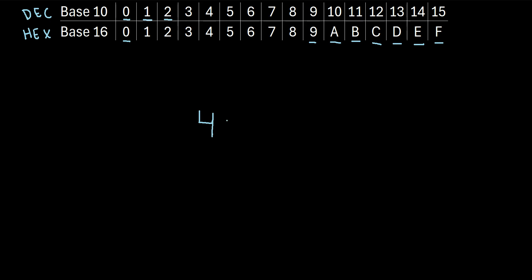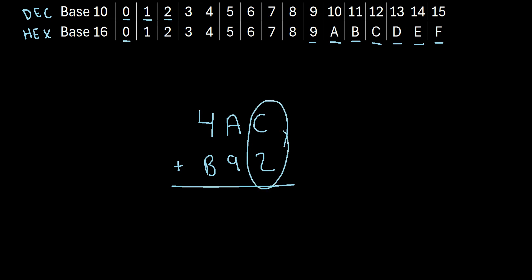Let's say we want to do 4AC plus B92. How can we add these two hexadecimal numbers? We'll start just like ordinary addition, focusing on the first column. What is C plus 2? Well, remember C is the same as 12. So really what we have is 12 plus 2, which is 14. But instead of writing 14, we write an E right here, since that's what we use in the hexadecimal system.